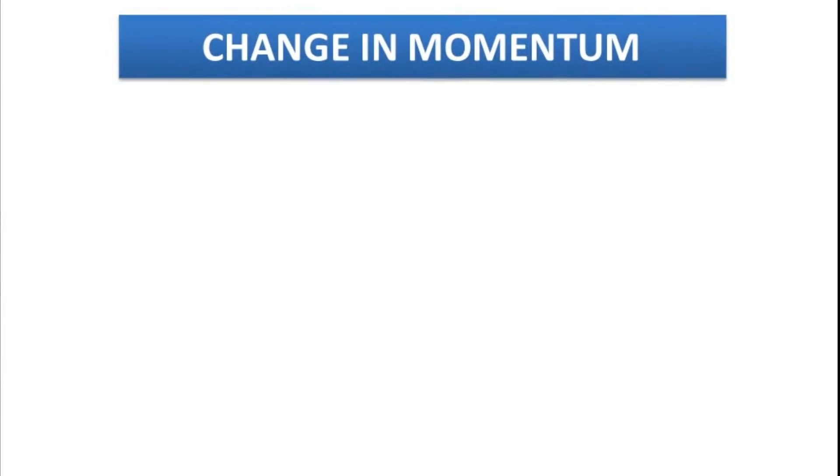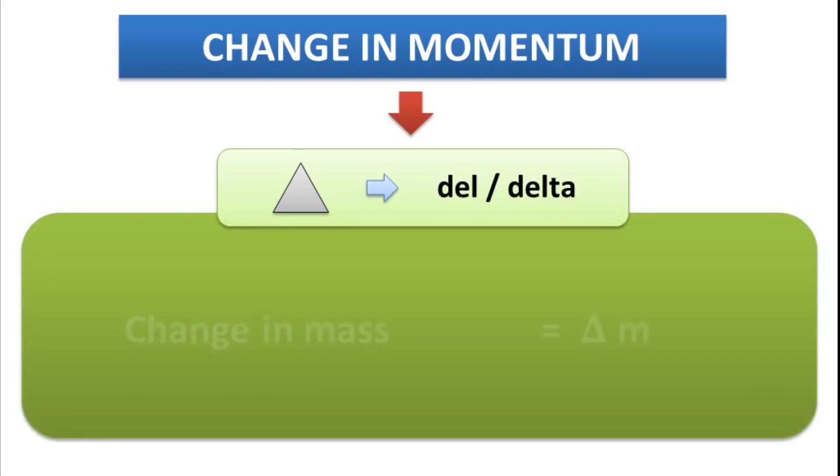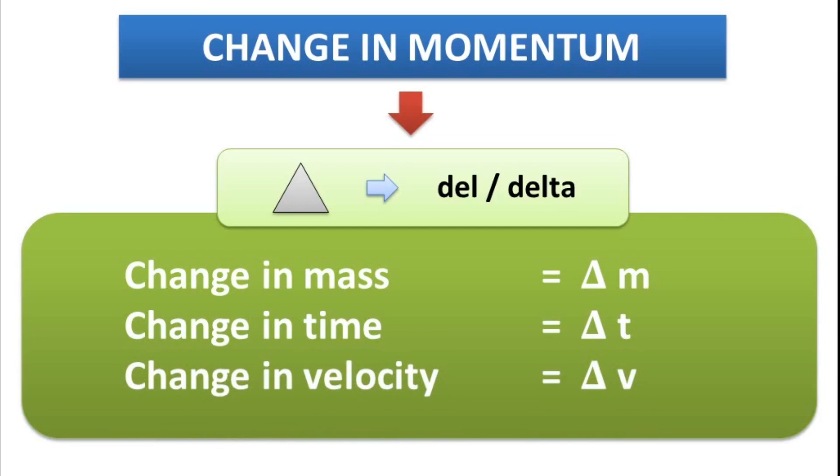Now, let us study change in momentum. Usually, in physics, if you want to show a small change in any value, we use a symbol called as del or delta. It is represented by a triangle-like symbol. Please note, whenever you see the symbol, it does not mean a triangle in physics, but change in that particular quantity. And we pronounce it as del or delta. That means, if we want to write change in mass, we write delta M. If we want to write change in time, then we write delta T. If we want to write change in velocity, we may write as delta V and so on.